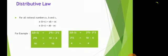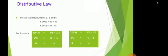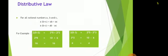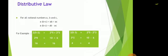Distributive law. For all rational numbers a, b and c, a is multiplied by b plus c and a is multiplied by b minus c.